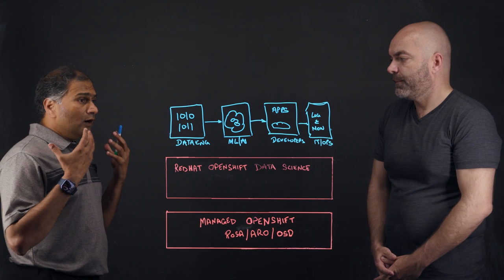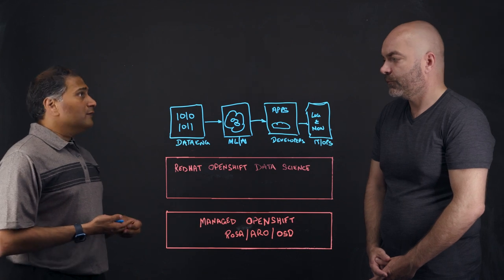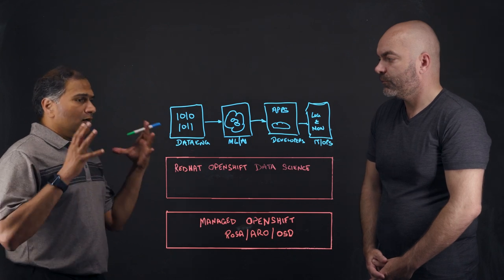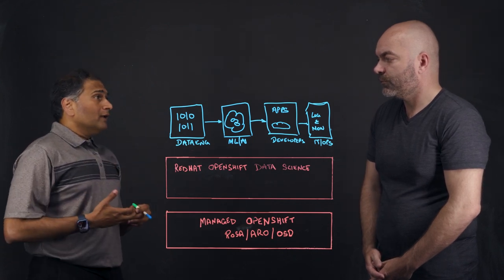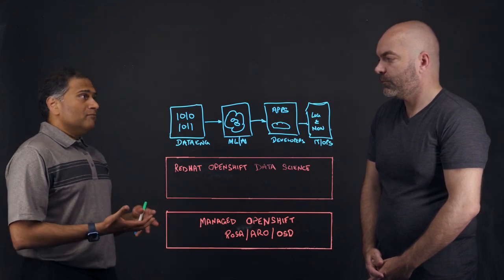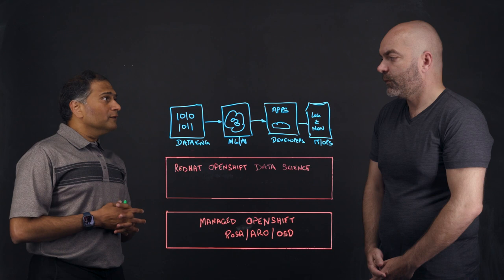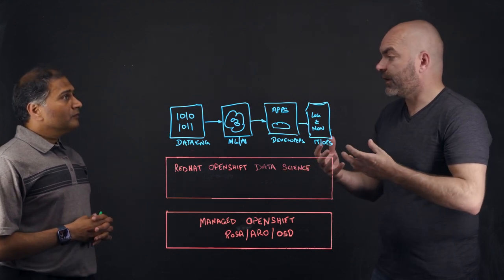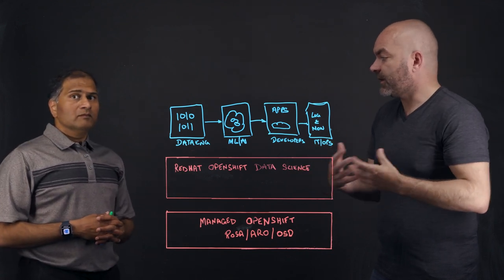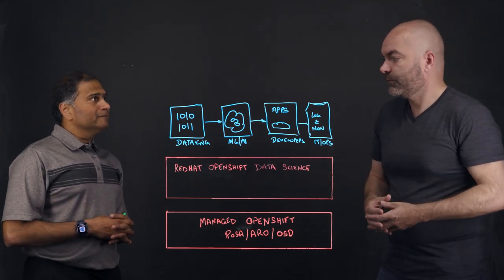So when you think about this whole cycle, the data scientists are used to different kinds of tool sets, like Jupyter Notebook, TensorFlow. All those things are available in this data science offering where they can not only use the tools in runtime, but also from a data point of view, they can access data lakes, NoSQL, SQL kind of services. It's very similar to the Red Hat product offerings around runtimes where developers have access to Java runtimes and other runtimes that Red Hat provides. We're doing the same thing, but on the data science workload perspective as well.